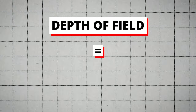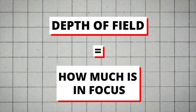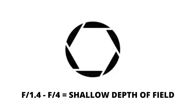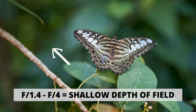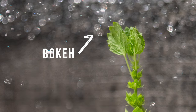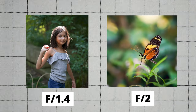Aperture also affects the depth of field in a photo, which is another way of saying how much of the picture is going to be sharp and in focus. A lower f-stop number, such as f1.4, will result in a larger aperture opening, which allows more light to enter the camera and results in a shallower depth of field. This means that your subject will be in focus and the background will be blurry. This is also what creates bokeh in low light shooting. A lower aperture number is usually used for portraits or when you want a subject to stand out from the background.